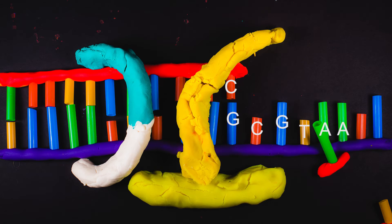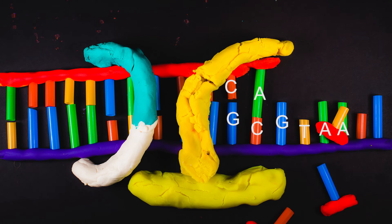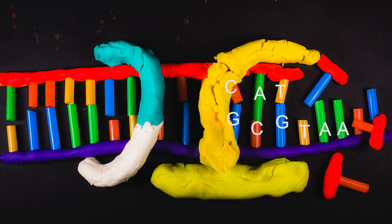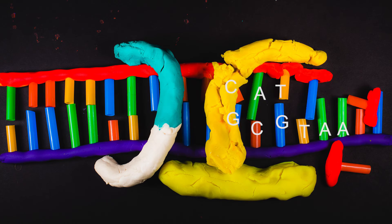The accuracy of the base pairing is called the fidelity. Polymerases avoid mistakes in replication through active site geometry and a 3 to 5' exonuclease activity, which allows the polymerase to remove incorrect base pairs from the strand.